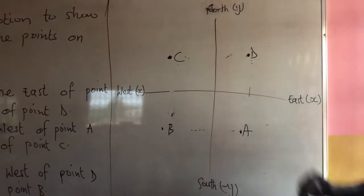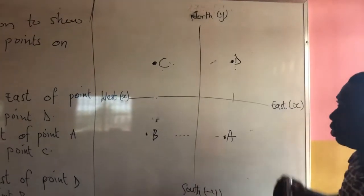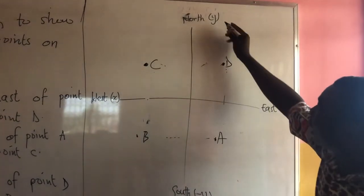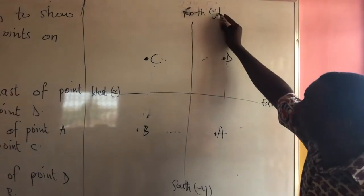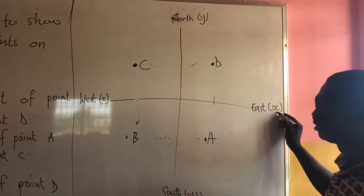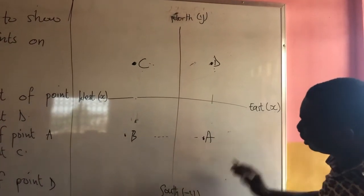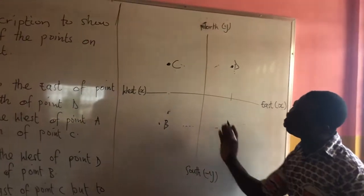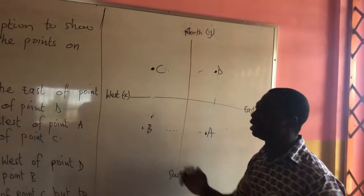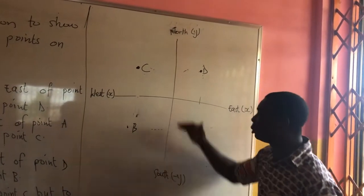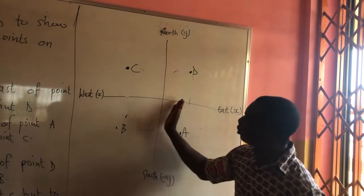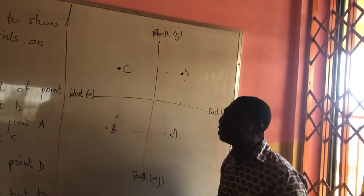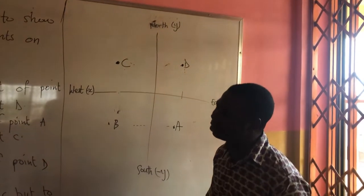The Y-axis is for the north, and then X is for the east. This side coming down is negative, and going to the other side is also negative for X. Coming down is negative for Y, and going to the west is negative for X.